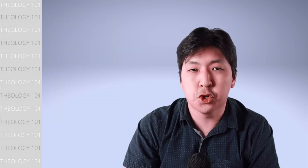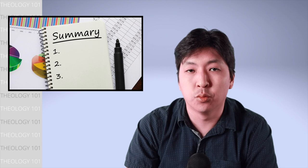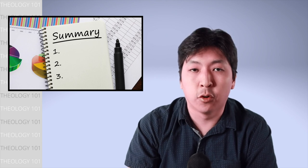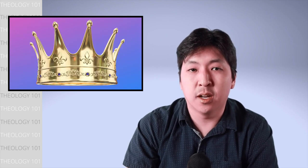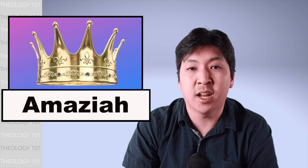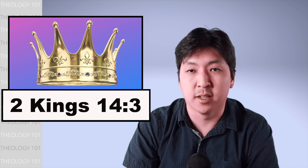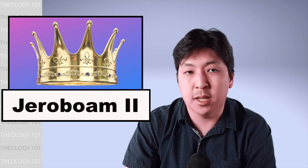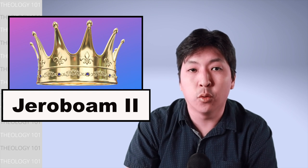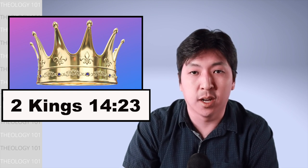At this point, we start to see shorter summaries of the different kings who ruled Judah and Israel before the destruction. Joash's son Amaziah ruled Judah for twenty-nine years, and he did what was right in God's eyes. While Jeroboam II became king of Israel and reigned forty-one years, and he did what was evil in God's eyes.